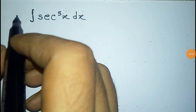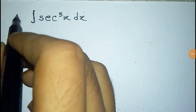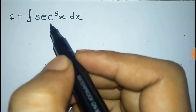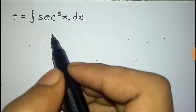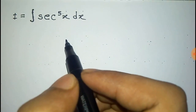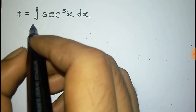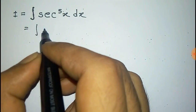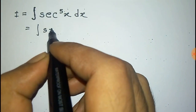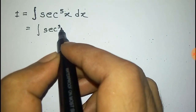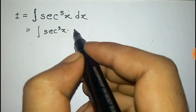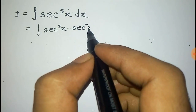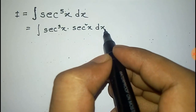We have to integrate sec to the power 5x dx. For this, we consider that I is equal to the integration of sec to the power 5x dx. Now, we can write sec to the power 5x as the product of sec to the power 3x into sec square x dx.